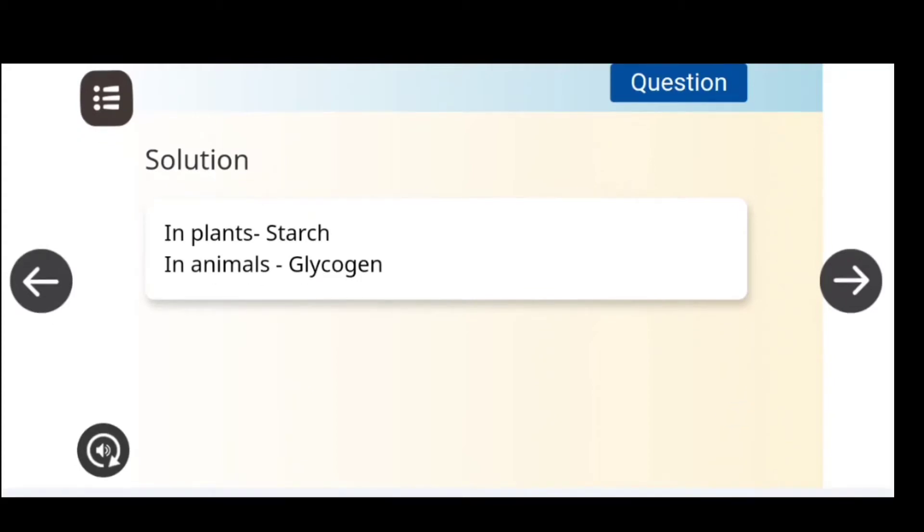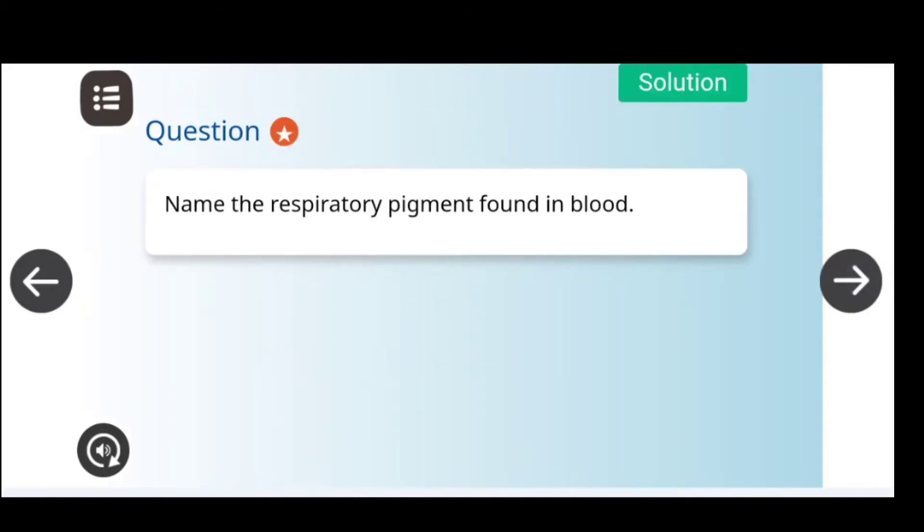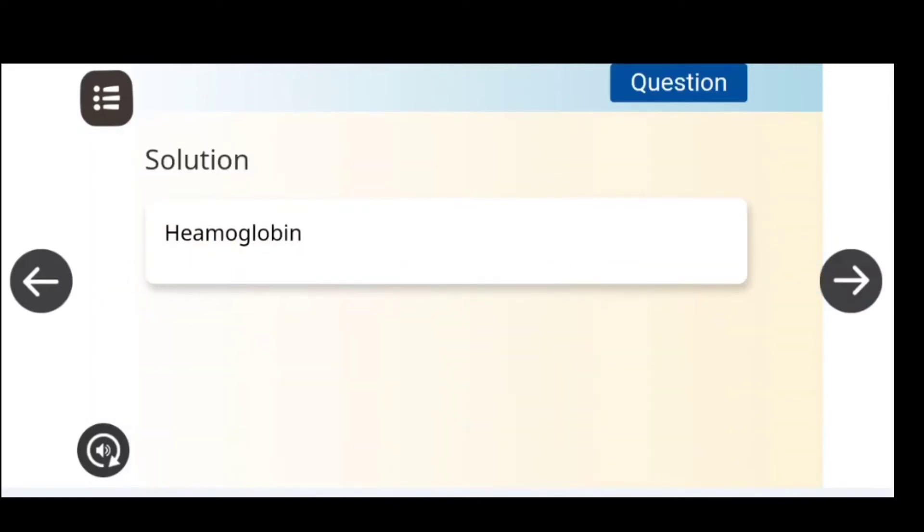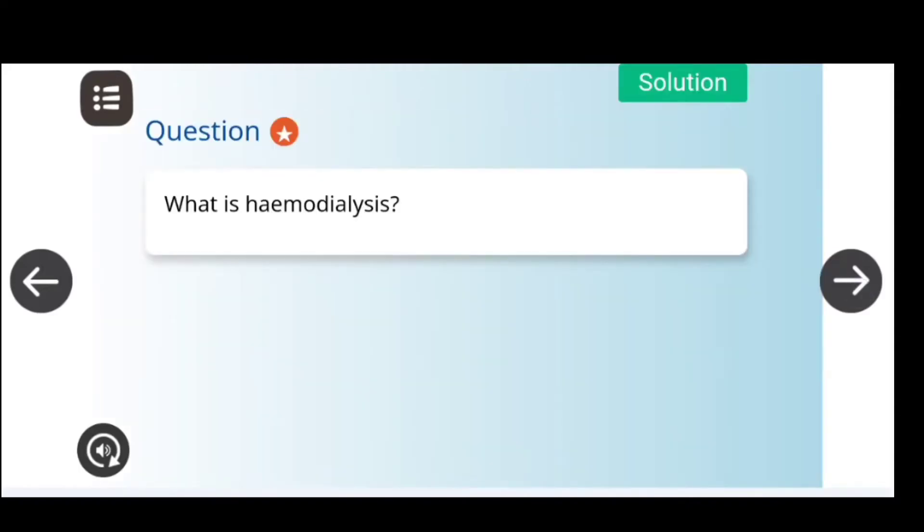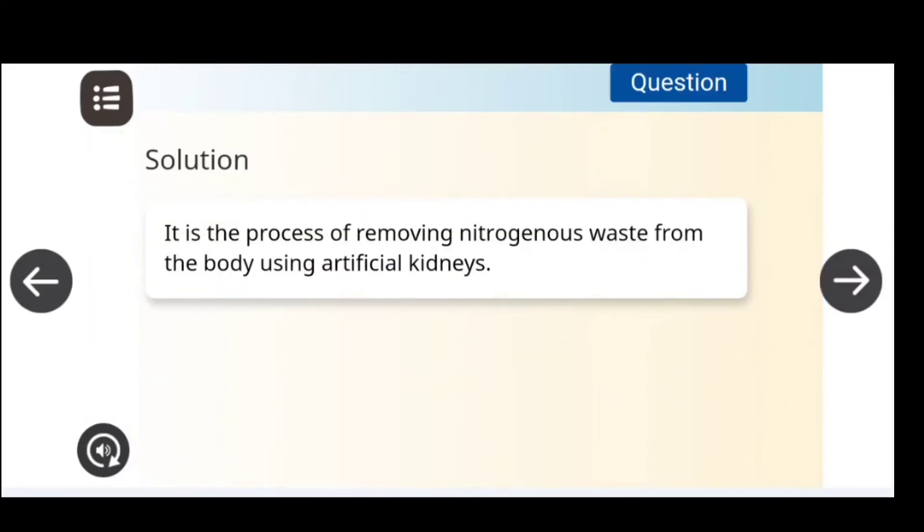Name the respiratory pigment found in the blood. Yes, this is hemoglobin. Next question: What is hemodialysis? Hemodialysis is the process of removing nitrogenous waste from the body using artificial kidneys.